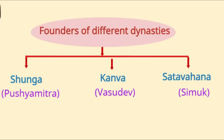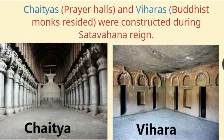Before moving ahead, we shall know the different dynasties in South India and their founders. The Shunga dynasty was founded by Pushyamitra, the Kanva dynasty by Vasudev, and the Satvahana dynasty was founded by Simuk.